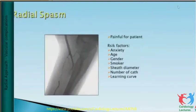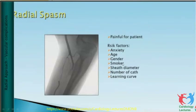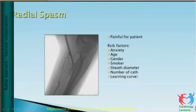Risk factors for radial spasm — it is very painful for the patient. Spasm is more common when the patient is anxious, female, younger, and especially in smokers, who have more spasm compared to non-smokers, similar to coronary artery disease. Sheath-to-artery size mismatch can also cause spasm. Number of catheter exchanges — puncturing the radial artery on alternate days increases spasm risk. In the first 80 cases of the learning curve, spasm is more frequent; after 80 cases it is much less because the procedure is quicker.